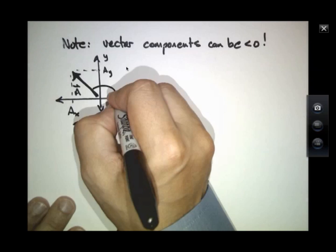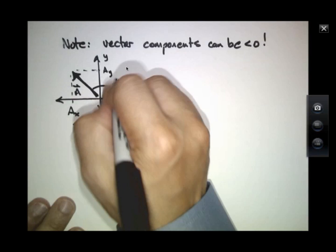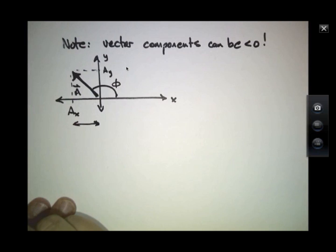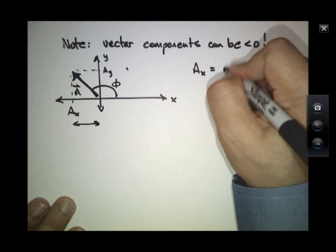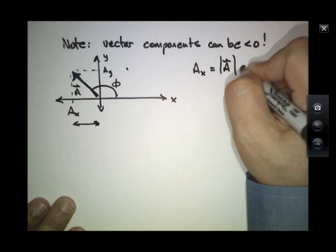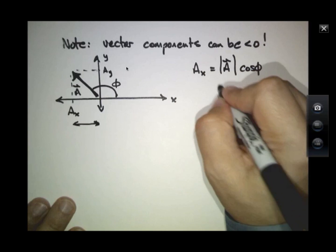Thought of another way, this angle, phi, is more than 90 degrees. And so when I go and compute AX, which is the magnitude of A, times the cosine of phi, that's going to be less than zero.